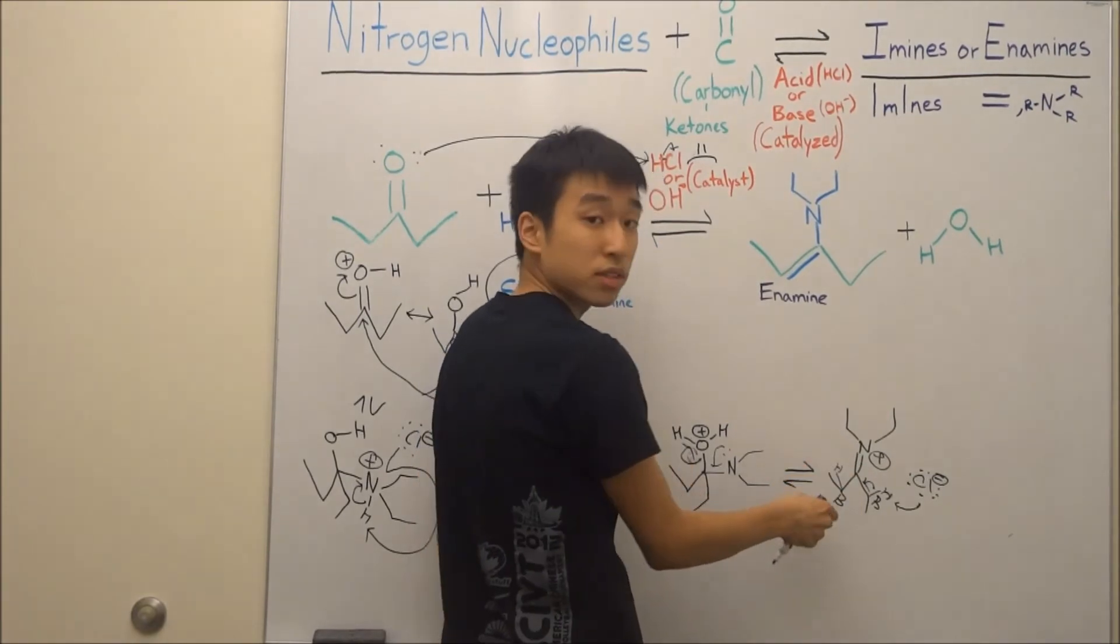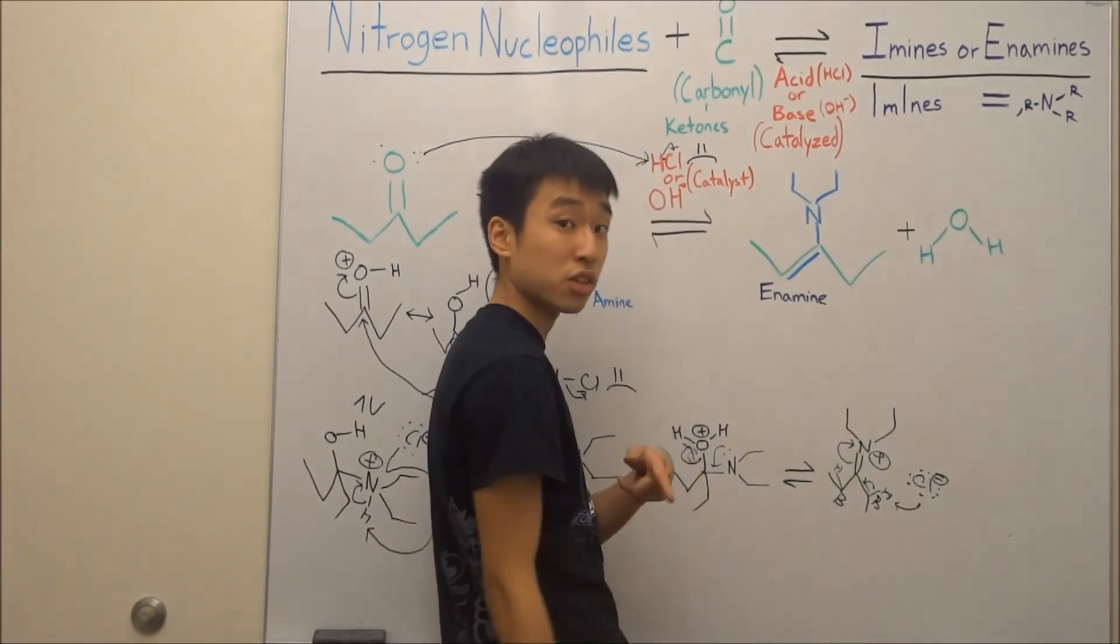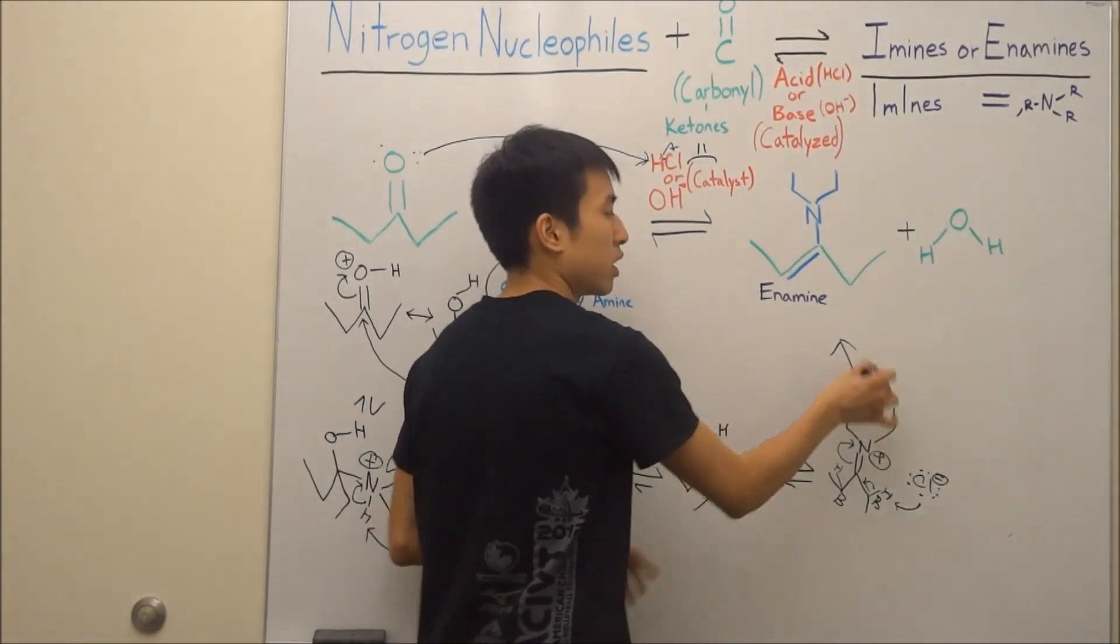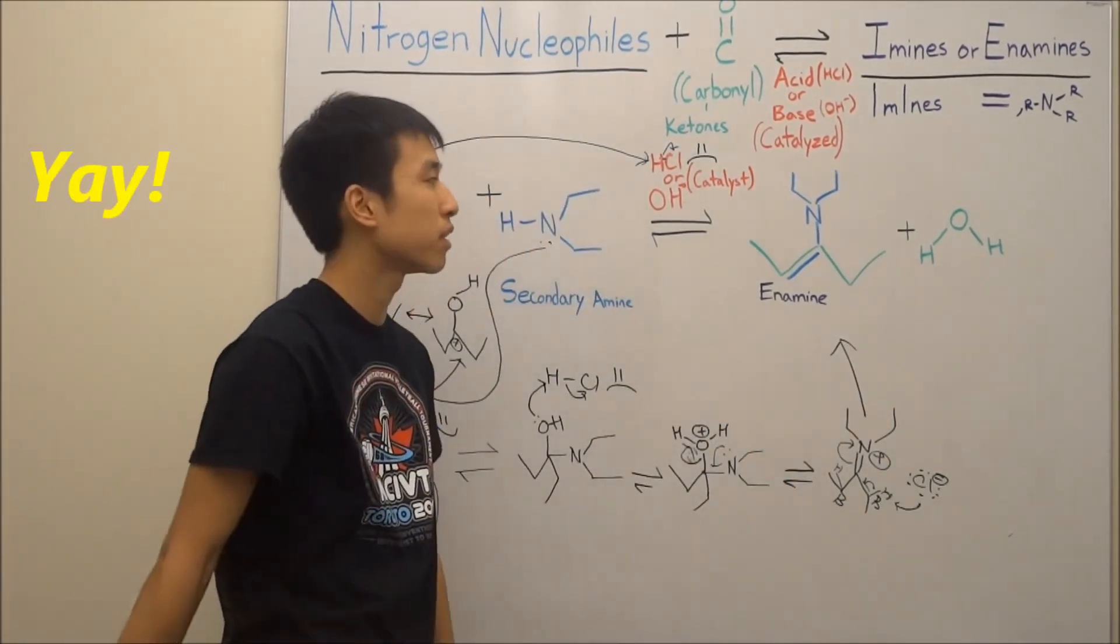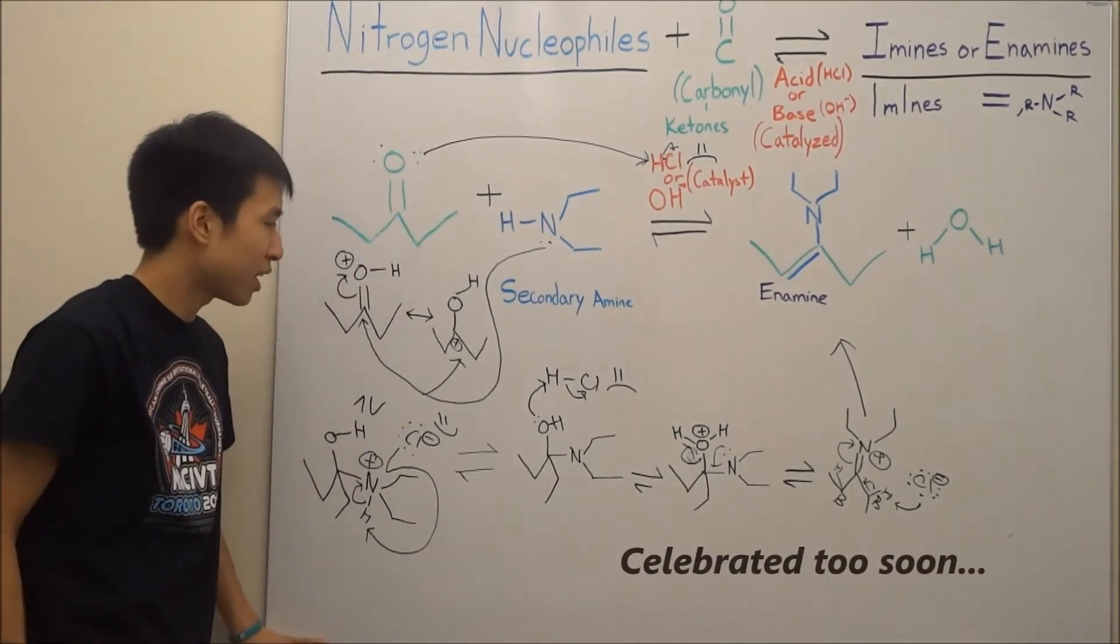Right? Carbon already has four bonds. He doesn't want the fifth bond. So he resonates it back up to the nitrogen to fix the unstable nitrogen charge. And then you get your enamine product from there. Hopefully that wasn't too crazy for you guys. Holy crap.